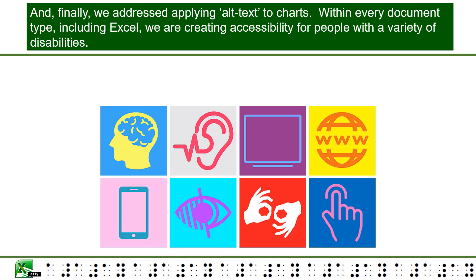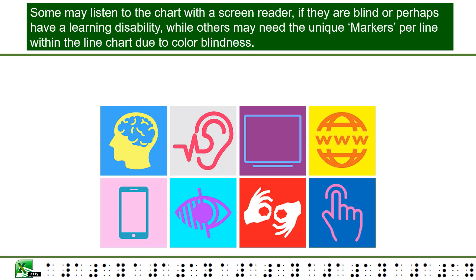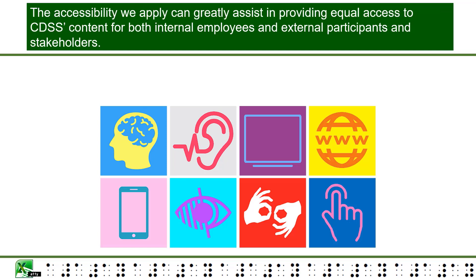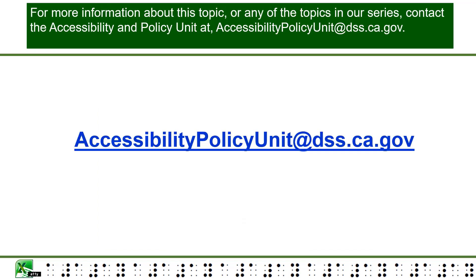Within every document type, including Excel, we are creating accessibility for people with a variety of disabilities. Some may listen to the chart with the screen reader if they are blind or perhaps have a learning disability, while others may need the unique markers per line within the line chart due to color blindness. The accessibility we apply can greatly assist in providing equal access to CDSS content for both internal employees and external participants and stakeholders. For more information, contact the Accessibility and Policy Unit at accessibilitypolicyunit@dss.ca.gov.